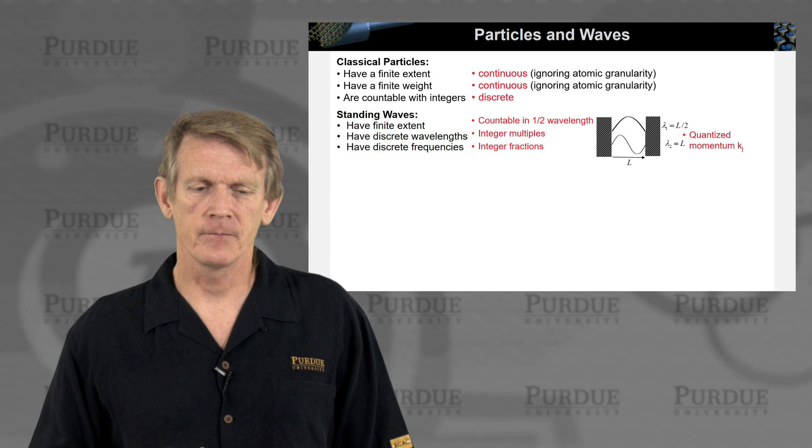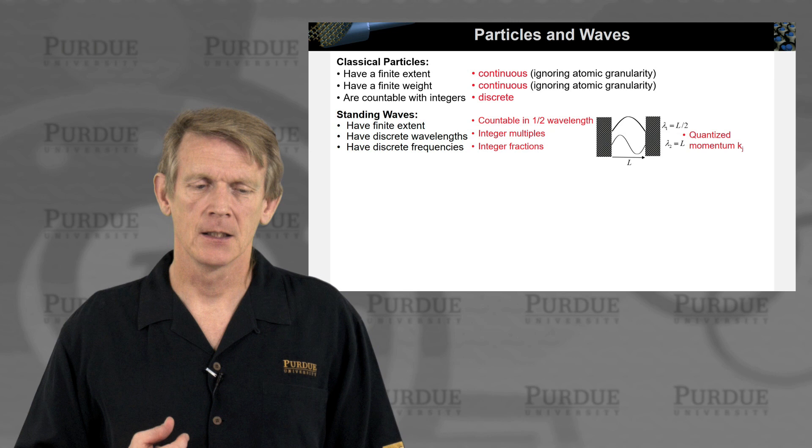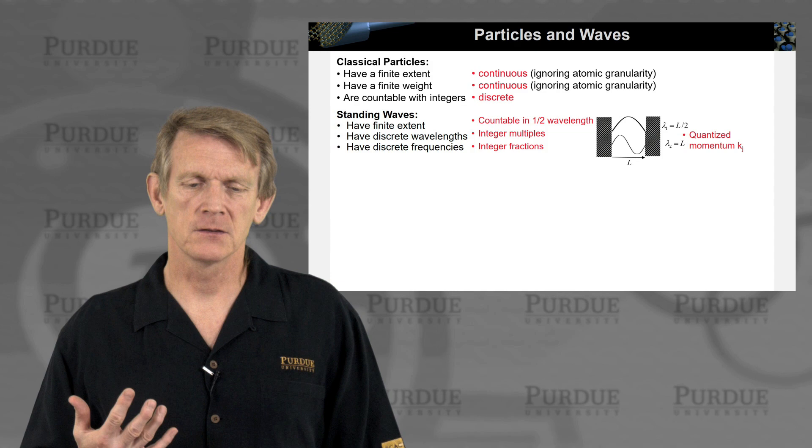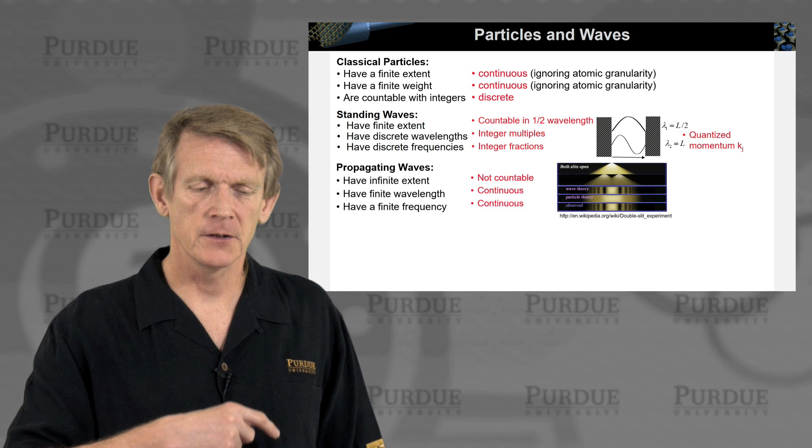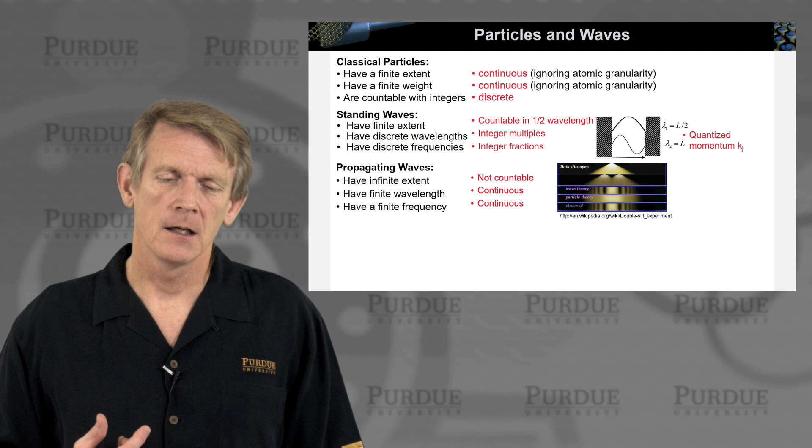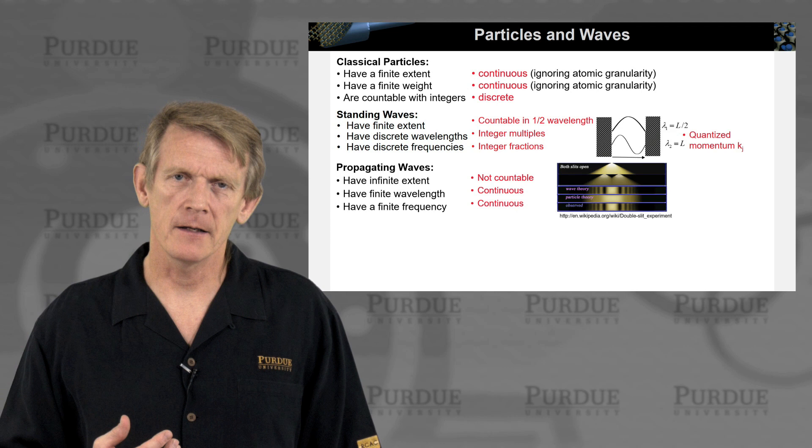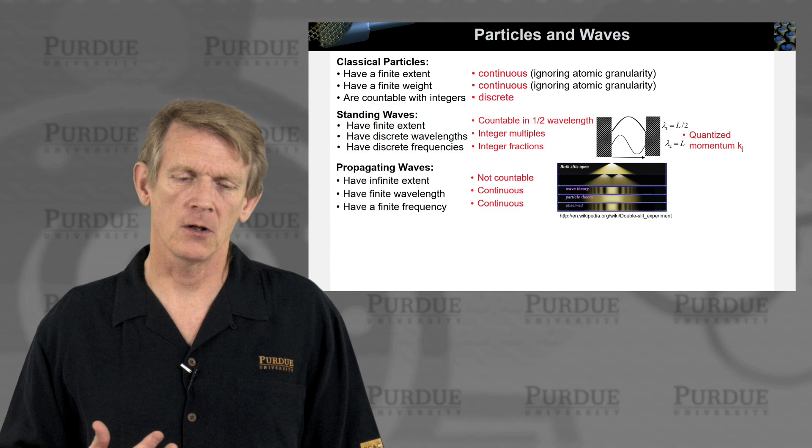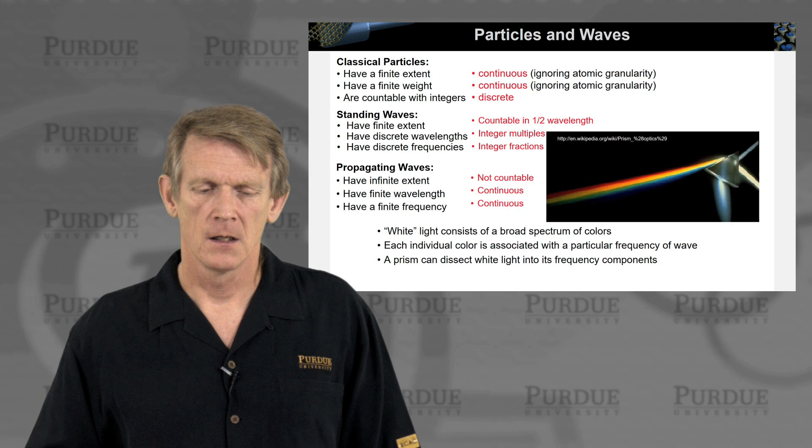All right. So let's compare those three particles and waves with each other. So again, classical particles have a finite extent, so have standing waves. They have a finite weight. The equivalent is not given in the standing waves. But if you now also look at propagating waves, the propagating waves have infinite extent and a finite wavelength, finite frequency, but continuous of these. All I'm trying to appeal is that we compare particles and waves on similar concepts. And we'll see later that there's something called particle-wave duality, where these elements cross over.